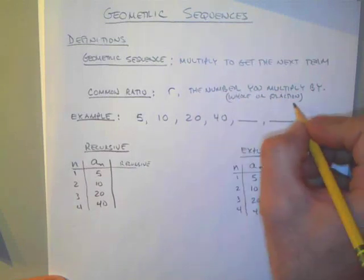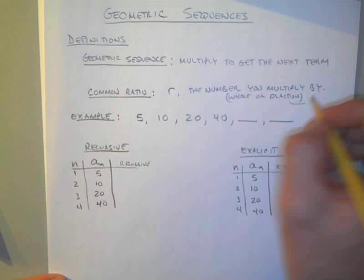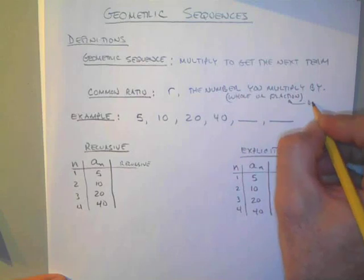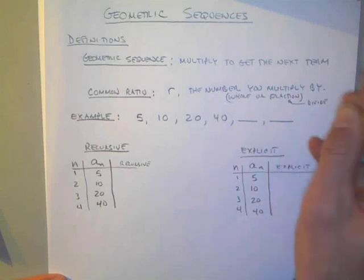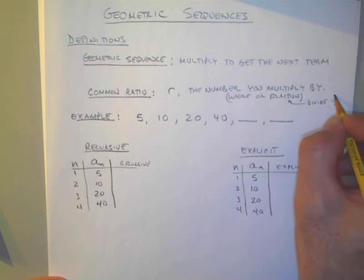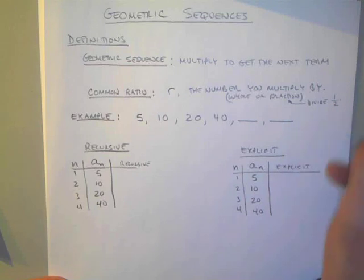And if you think about a fraction, this is kind of how you get to divide. So say, for example, you wanted to divide by 2 — what you would really do is multiply by a half.